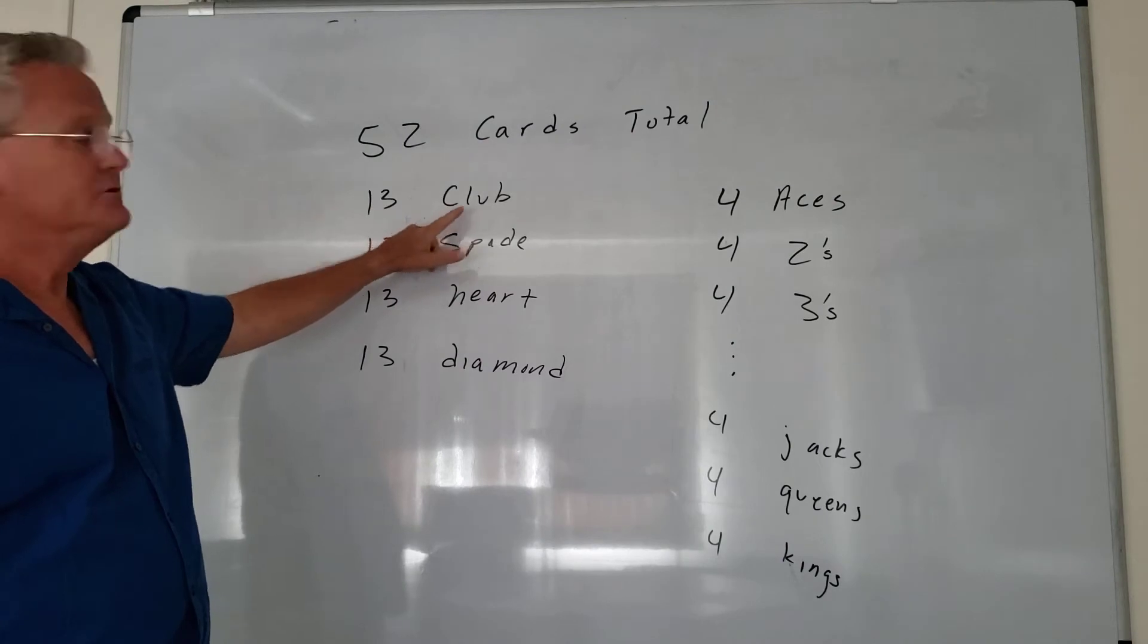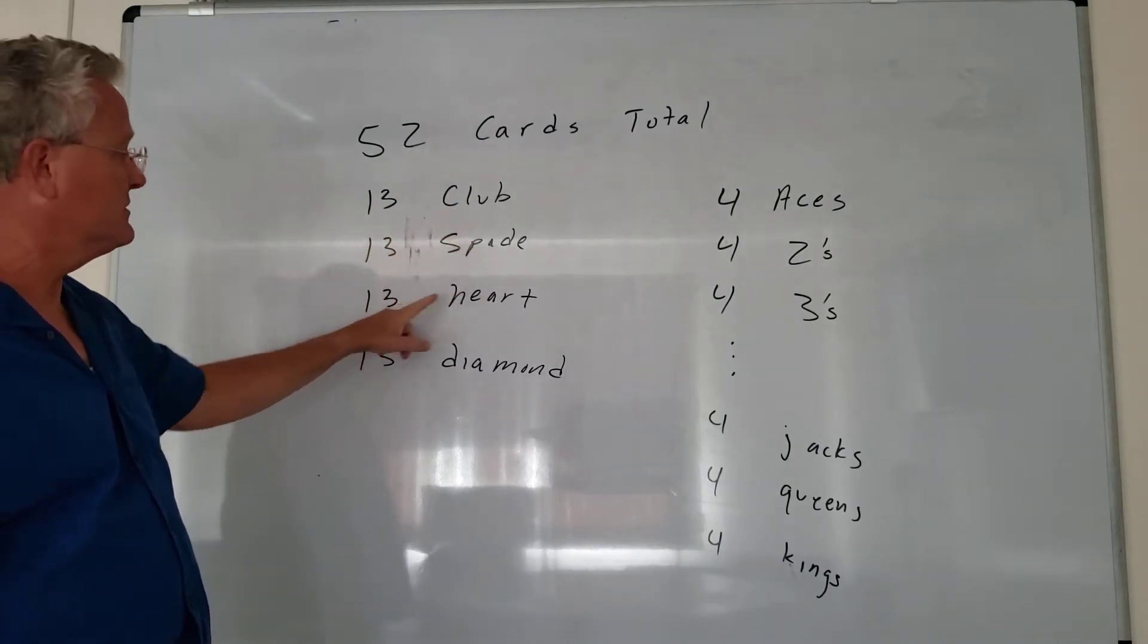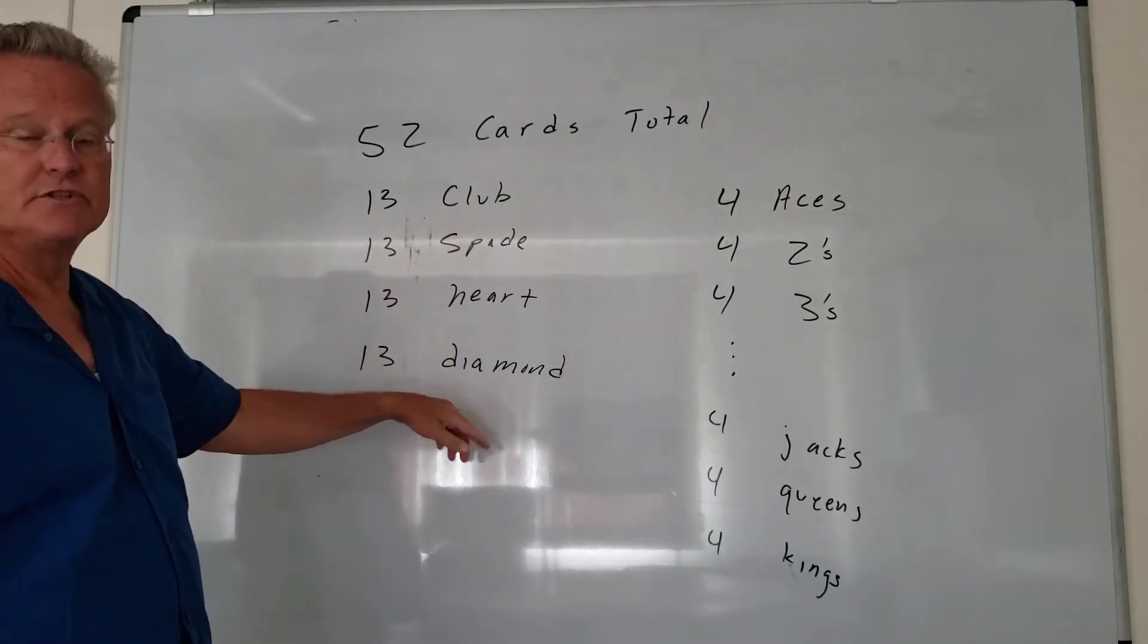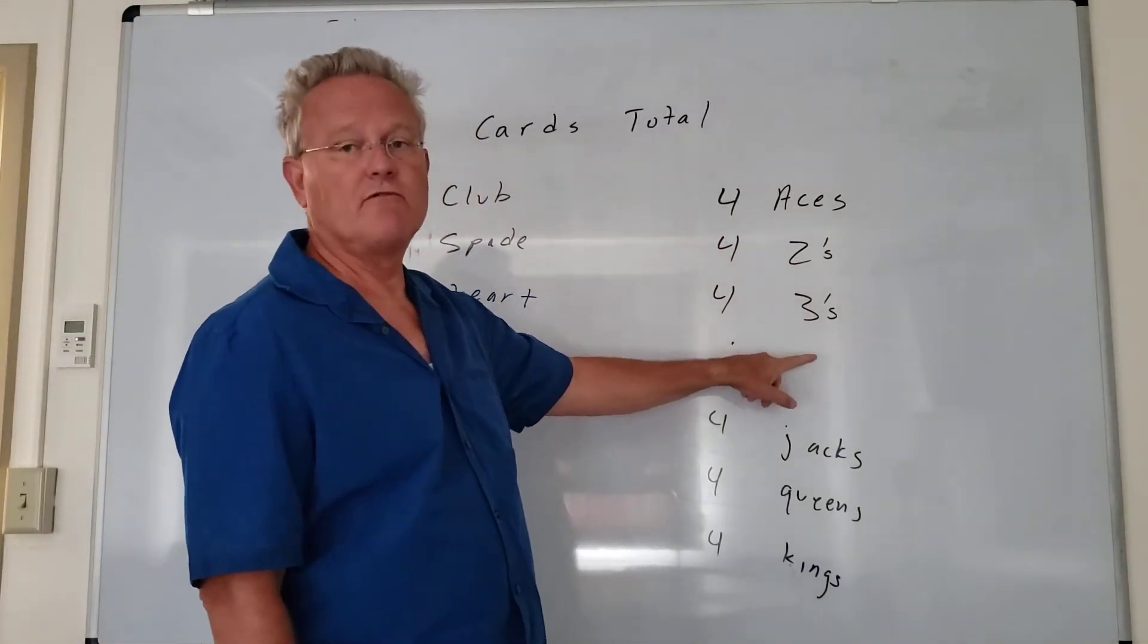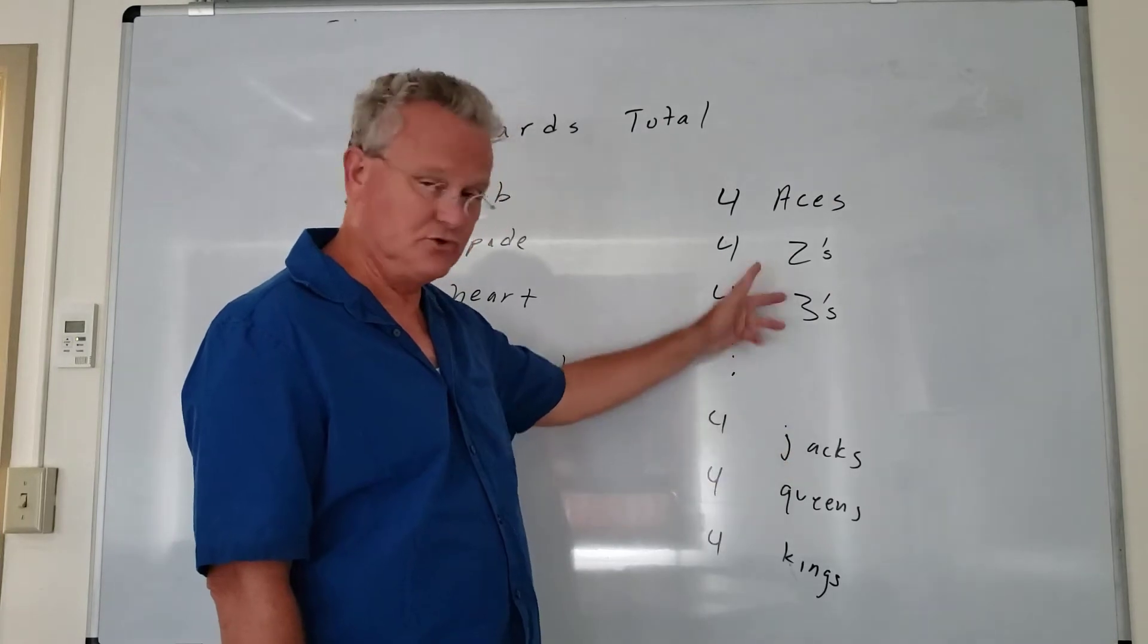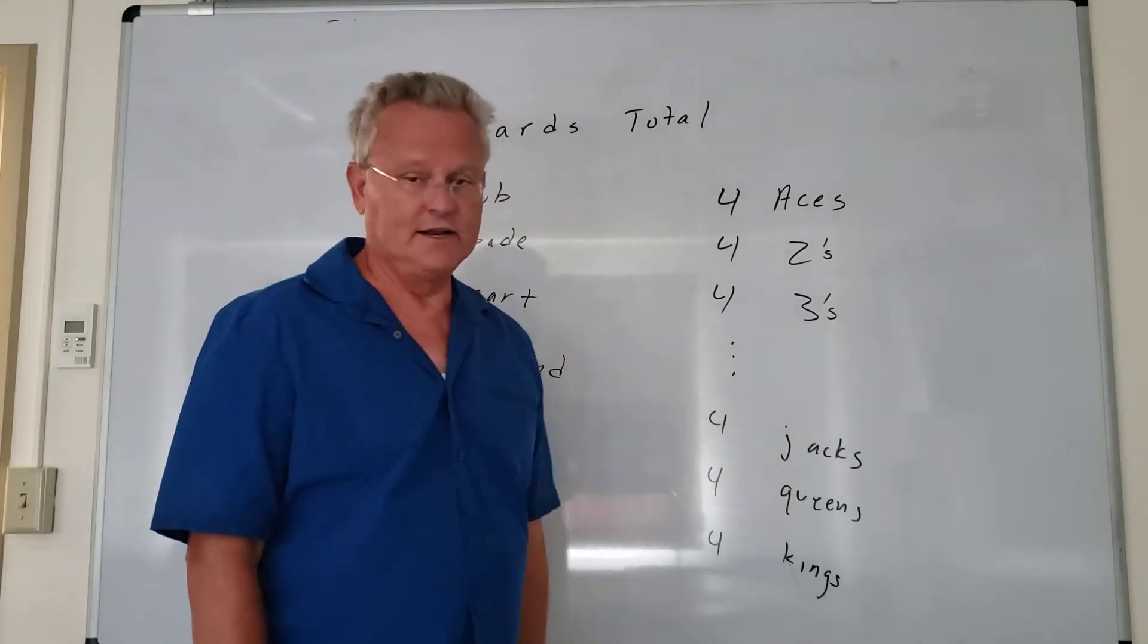There are 13 clubs, 13 spades, 13 hearts, and 13 diamonds. And there are four of each rank: four aces, four twos, four threes, four fours, four fives, and four jacks, queens, and kings.